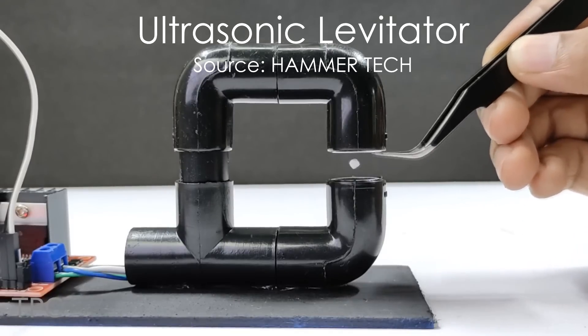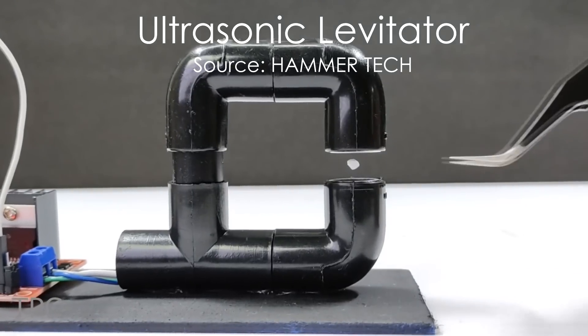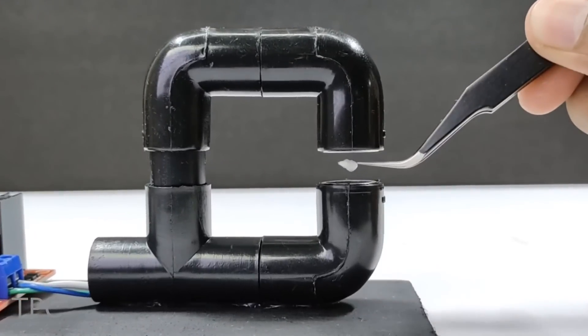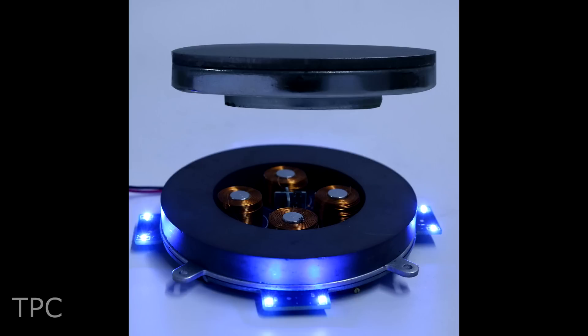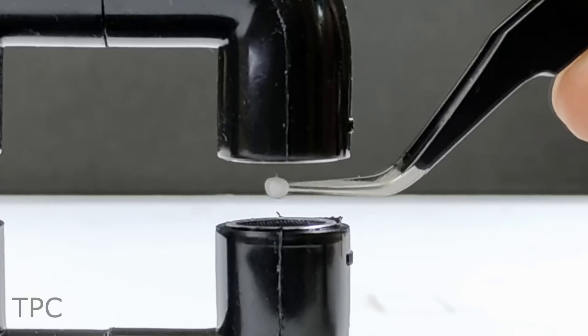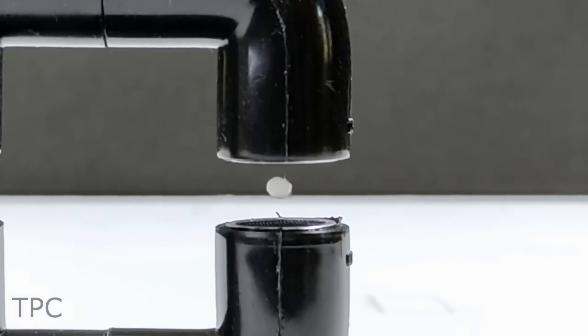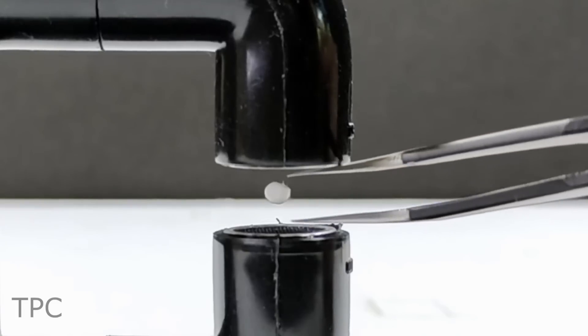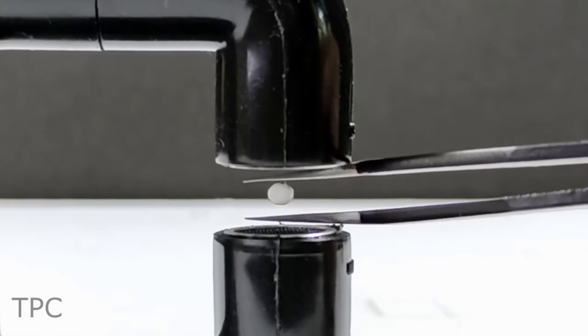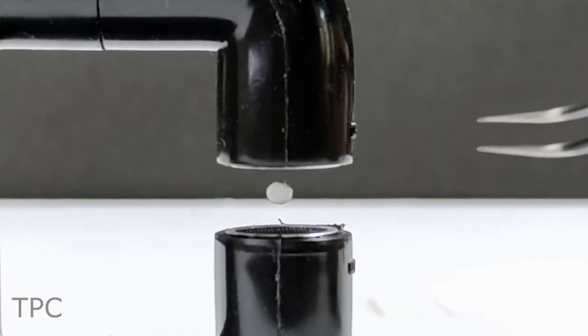This is an ultrasonic levitator. It uses the energy in sound waves to make light objects hover in mid-air. In contrast to magnetic levitation, the ultrasound method does not require a control loop to stabilize the hovering object. Using this levitation, the object simply lodges itself into one of the nodes of a standing acoustic wave.